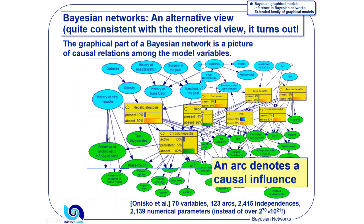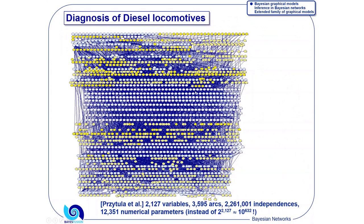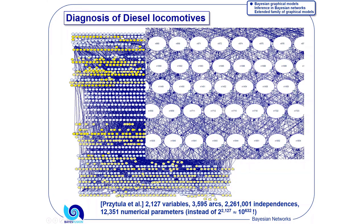This is even more impressive. This is a model for diagnosis of diesel locomotives, consisting of over 2,100 variables. If you wanted to represent the joint probability distribution over these variables, you would need 2 to the power of 2,100, which is 10 to the power of 600. There are 3,600 arcs, but it's more important how many arcs are missing. There are 2,200,000 independencies, missing arcs. And we can specify this joint distribution with just 12,000 parameters.